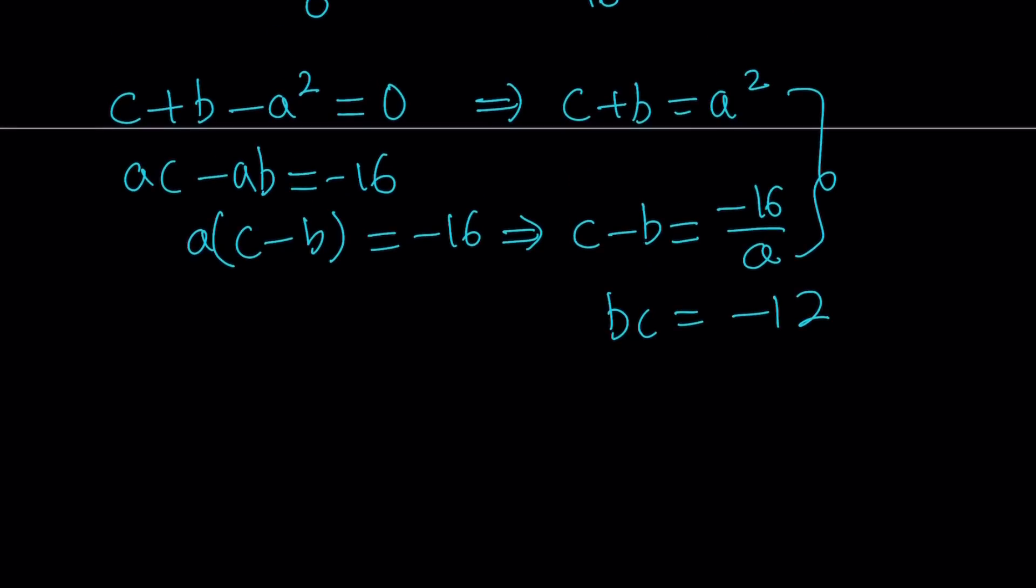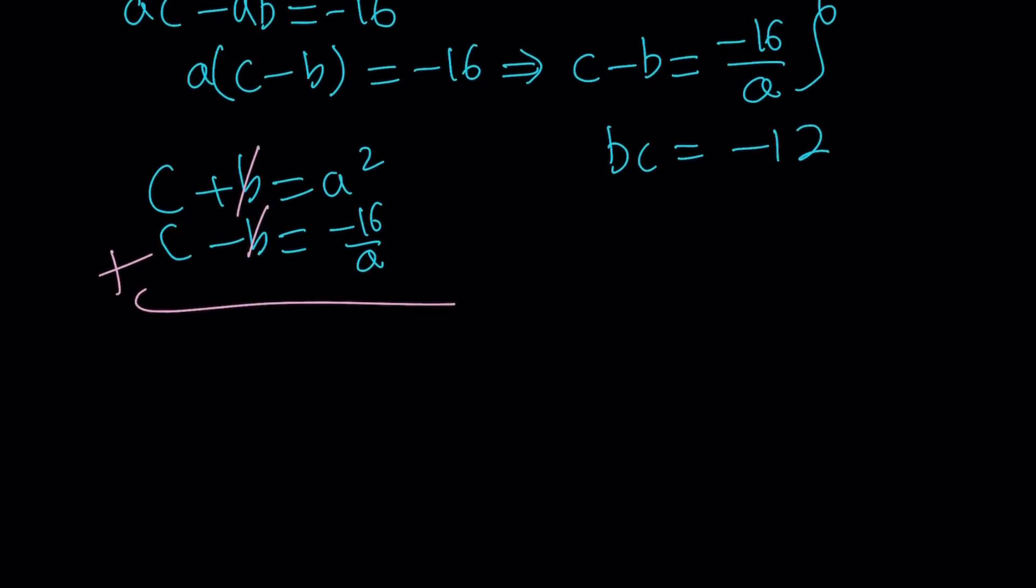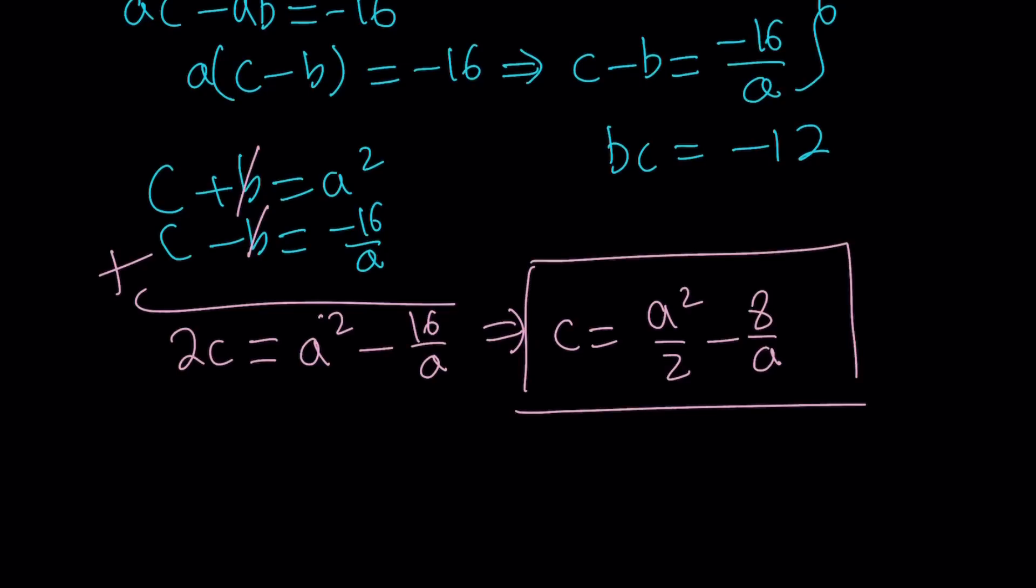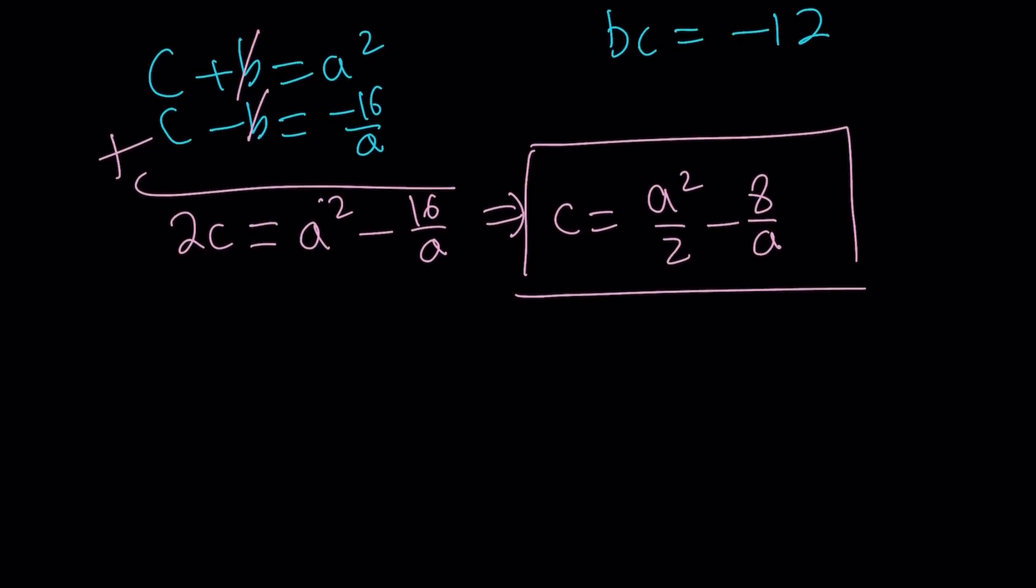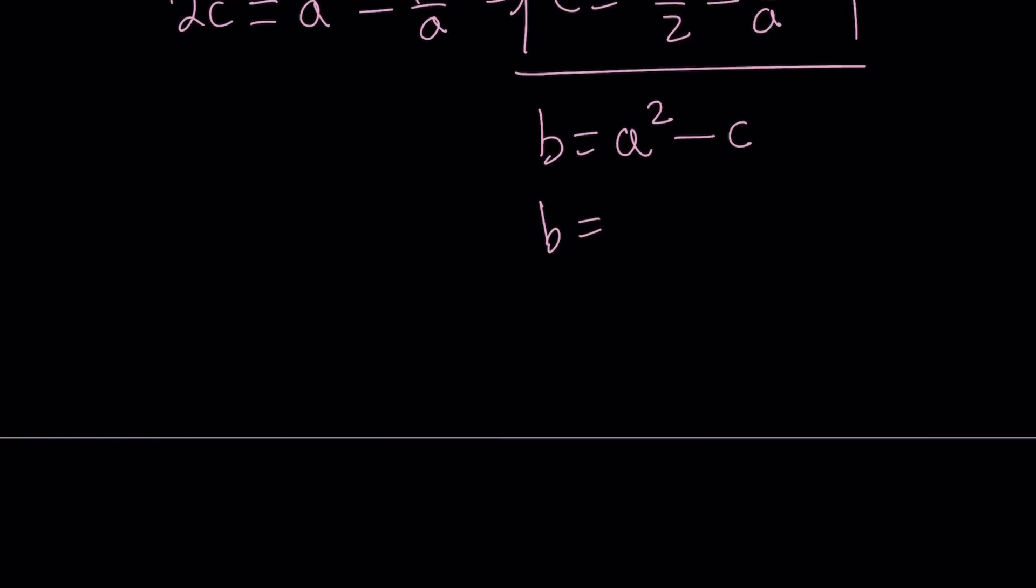Let's write each of these equations. c plus b minus a squared equals zero, which gives us c plus b equals a squared. The second equation is ac minus ab is equal to negative 16. If we factor out a here, we get a times c minus b equals negative 16, and from here we can isolate c minus b and write it as negative 16 over a. That's nice because notice that the b is going to cancel out when we add these two equations. And the last one is bc equals negative 12.